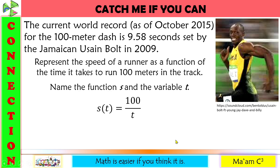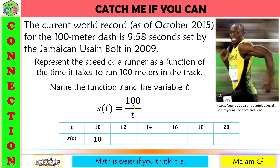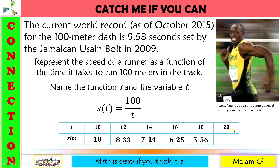Now let us create a table for this. We only have positive values for t because we do not have negative seconds of time. We substitute each value of t: 100 divided by 10 is 10; 100 divided by 12 is 8.33; 100 divided by 14 is 7.14; 100 divided by 16 is 6.25; 100 divided by 18 is 5.56; and 100 divided by 20 is 5.